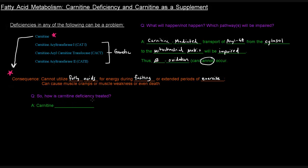So the question is, how can carnitine deficiency be treated? It's apparently a little complicated, but the simplest answer is carnitine supplements. If someone doesn't have carnitine, you give them carnitine — it's just an amino acid. Apparently that is the case, but it needs to be highly monitored and regulated. I'm not a doctor and I'm by no means offering medical advice; I'm approaching this from an academic perspective.